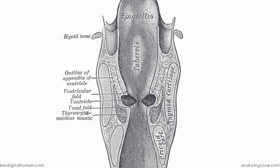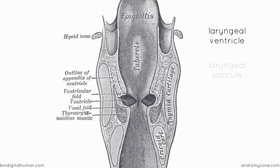Where the mucosa bulges out between the vocal and vestibular folds, you've got a trough-like space called the laryngeal ventricle. Extending backwards and upwards from this is the laryngeal saccule, which contains glands that produce secretions to lubricate the vocal folds. So you've got the laryngeal ventricle and the laryngeal saccule, whose glands secrete mucus to lubricate the larynx.